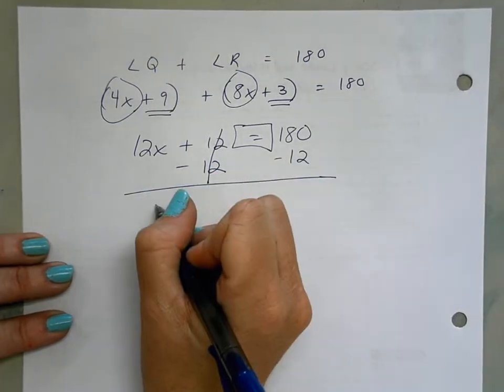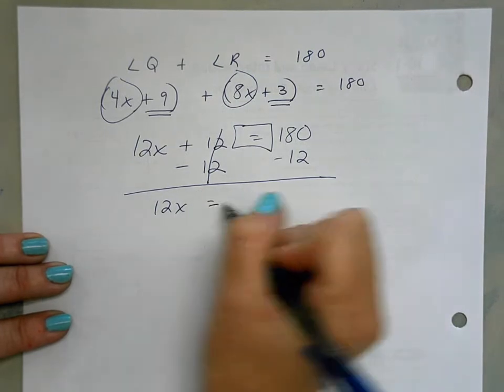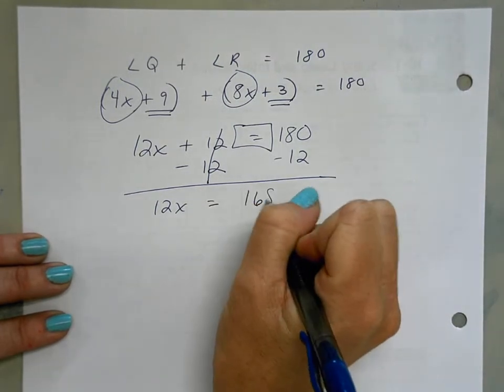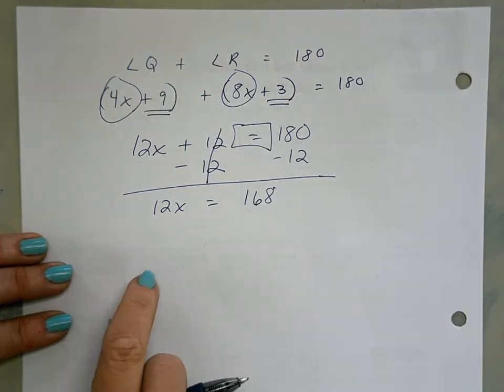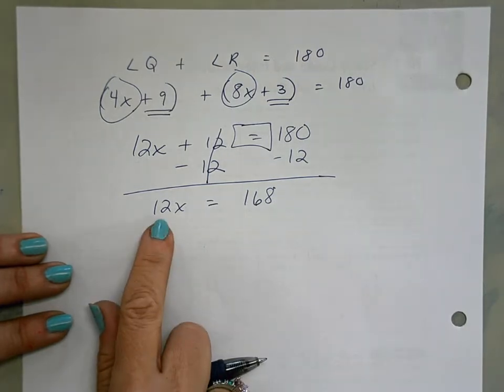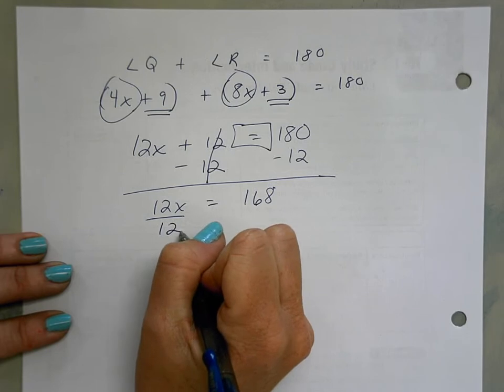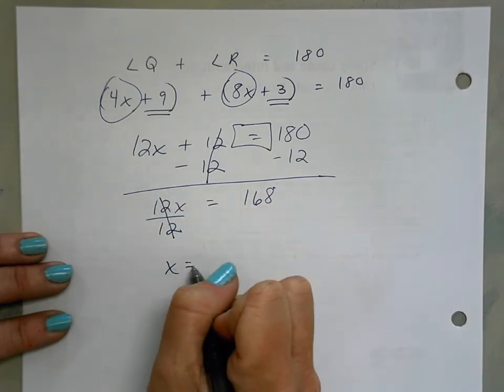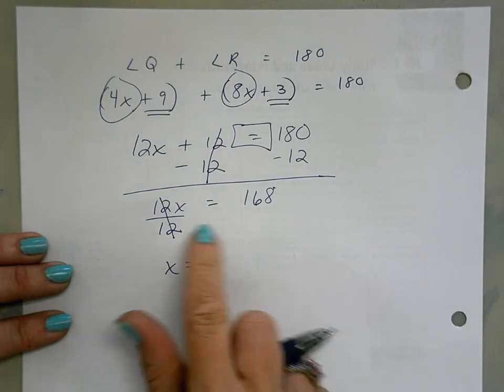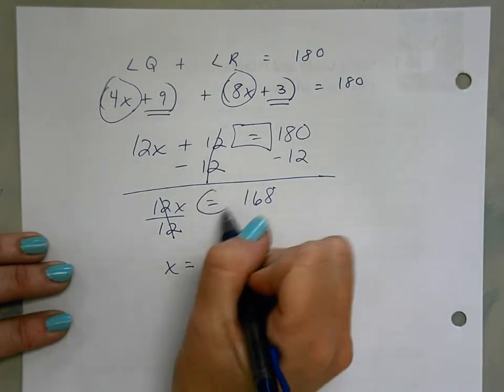So now I'm down to 12x equals 168. I'm getting there. I don't want 12 times x, I just want x. The opposite of times 12 is divided by 12. 12 divided by 12 is 1, so I'll have my 1x after I do the same change to keep the equal side true.